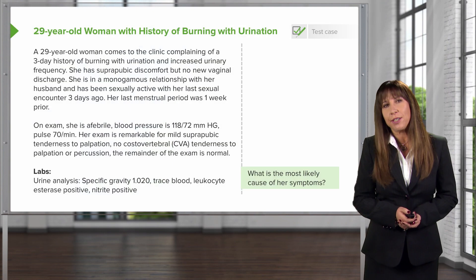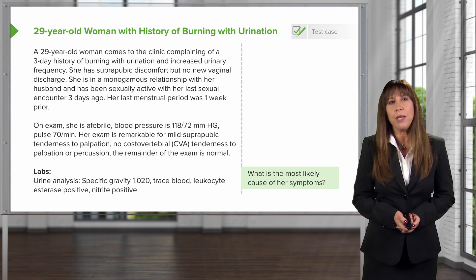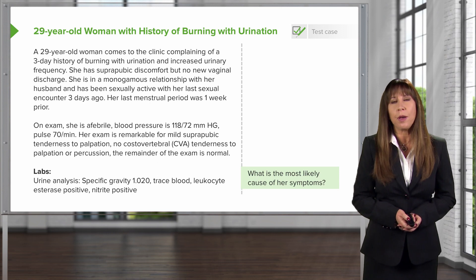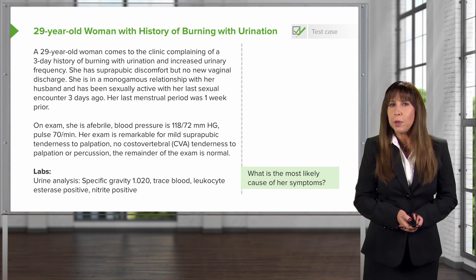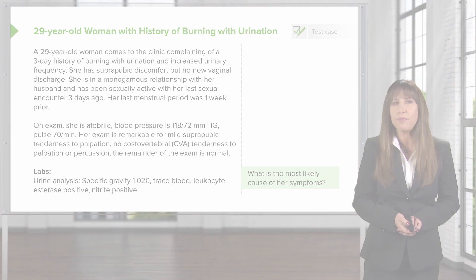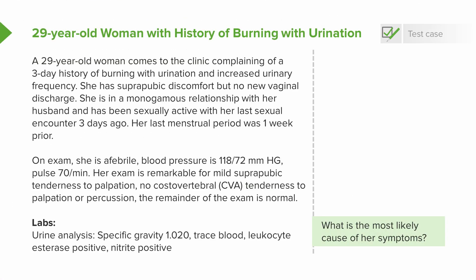Let's start out with a clinical case. A 29-year-old woman comes to the clinic complaining of a three-day history of burning with urination and increased urinary frequency. She has suprapubic discomfort but no new vaginal discharge. She's in a monogamous relationship with her husband and has been sexually active, with her last sexual encounter three days ago. Her last menstrual period was about one week prior.